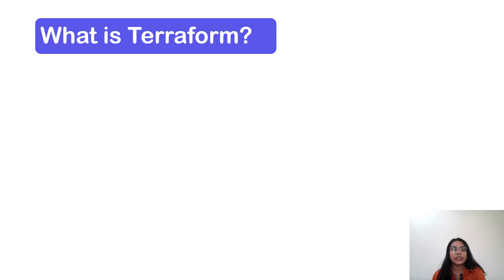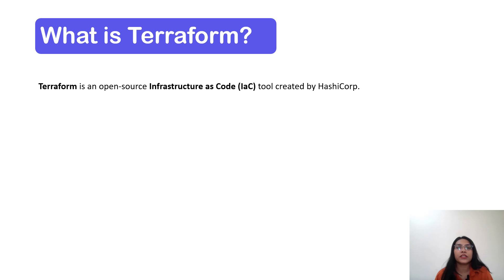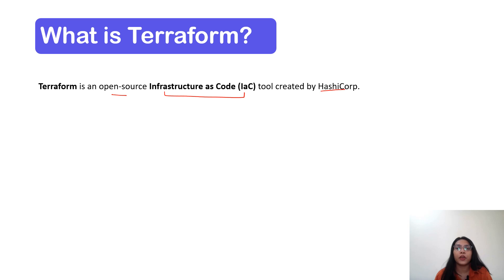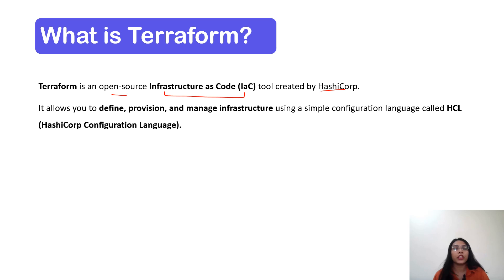So what is Terraform? Terraform is an open source infrastructure as a code tool. One of the most useful examples of infrastructure as a code would be Terraform, and this Terraform tool is created by the organization called HashiCorp. With the help of Terraform, you can define, provision, and manage infrastructure using a simple configuration language called HCL — the full form of HCL being HashiCorp Configuration Language.